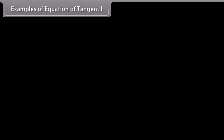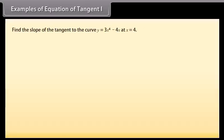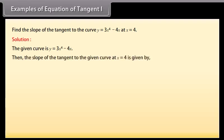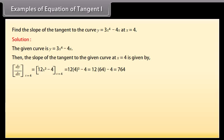Example: Find the slope of the tangent to the curve y = 3x⁴ − 4x at x = 4. Solution: The given curve is y = 3x⁴ − 4x. Then the slope of the tangent at x = 4 is given by dy/dx at x = 4, which equals 12x³ − 4 at x = 4, equal to 12 × 4³ − 4, which can be solved to 764.